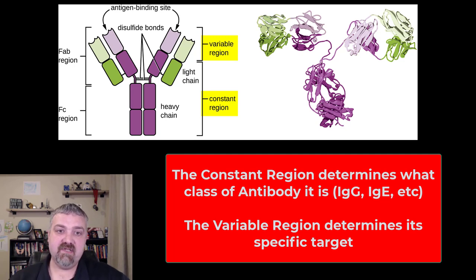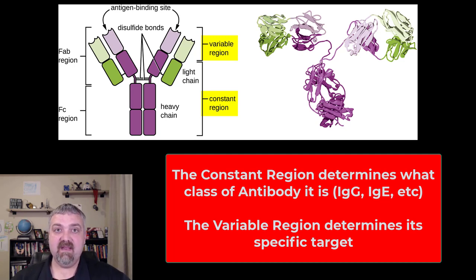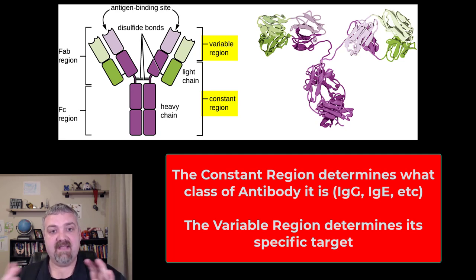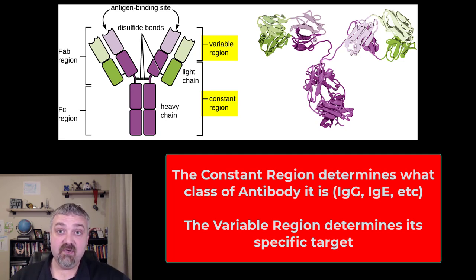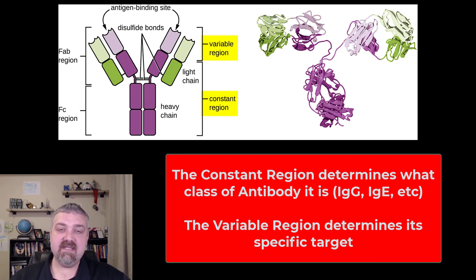The variable region there at the top is going to be where antigens bind. This is what's going to determine the specificity of an antibody. Think of it like all four keys look the same — that's the constant region — but the actual key with the little grooves, that's going to be the variable region. That's going to determine specifically what antigen this antibody is looking for.